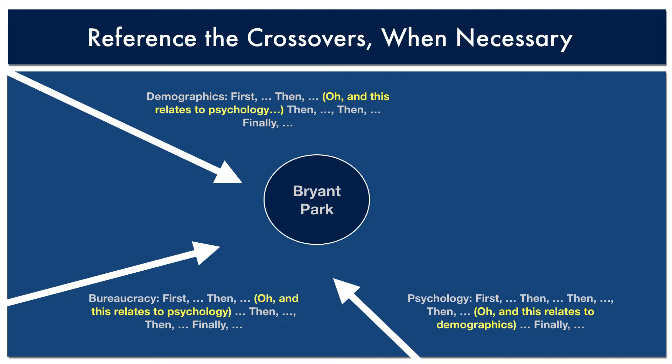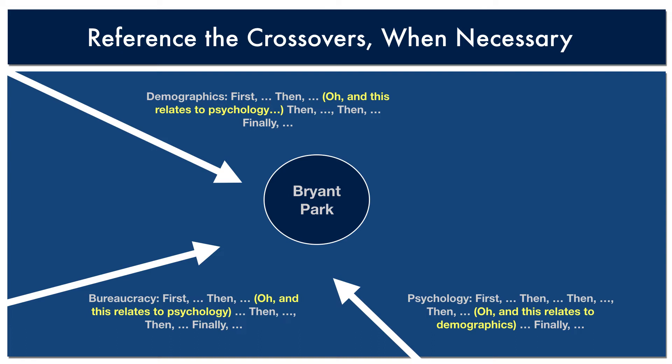Along the way, we might try to note how other processes cross over. Also, when you need to define a term, do so when the reader needs to understand that concept, and do it as fast as possible, then get back to business.